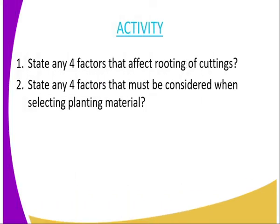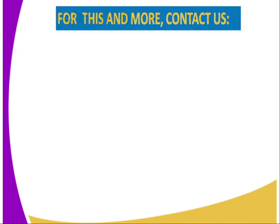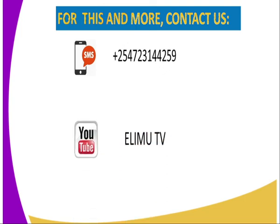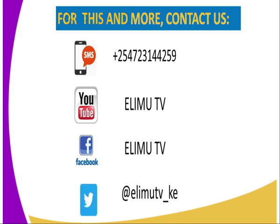We have come to the end of today's lesson. I will leave you some questions as an assignment. The first question: state any four factors that affect rooting of cuttings. The second question: state any four factors that must be considered when selecting planting material. For reference, you can refer to the secondary agriculture student book, written by the Kenya Literature Bureau. For more information, you can reach us through SMS at the number displayed on screen, on YouTube at Elimu TV, on Facebook at Elimu TV, and on Twitter — tweet us at Elimu TV underscore KE.